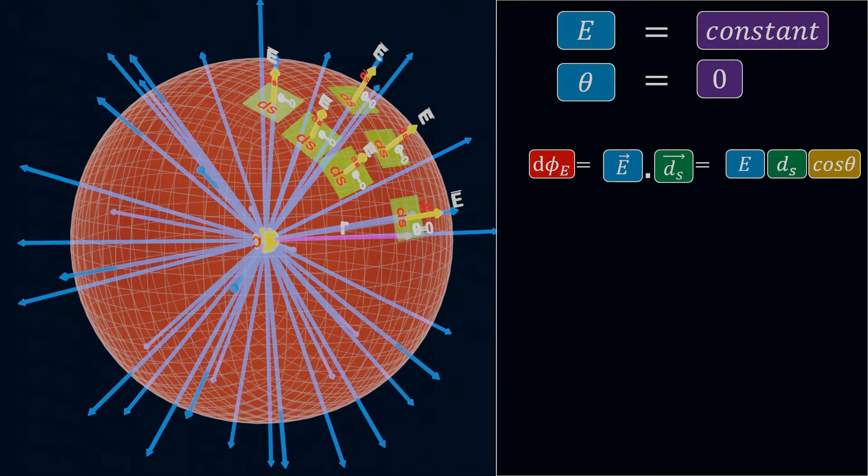Now let's return to our calculation. To calculate the total flux, we need to integrate E dS cos theta. We have already seen that theta is 0, and the electric field E is constant.